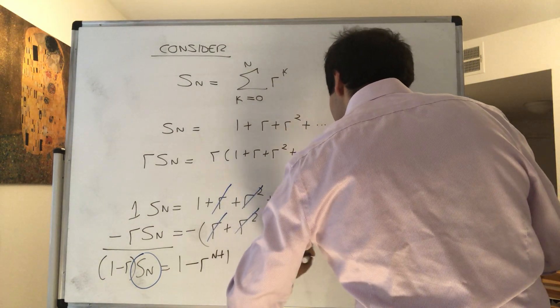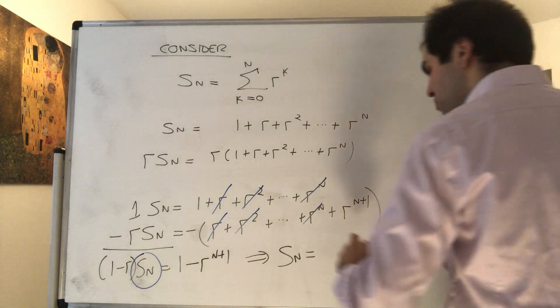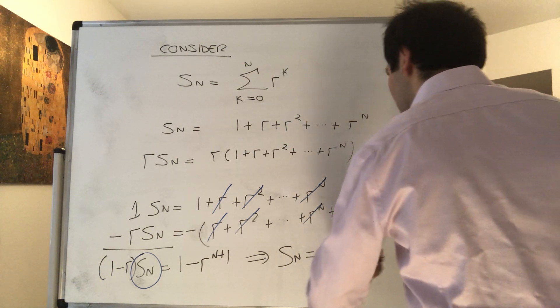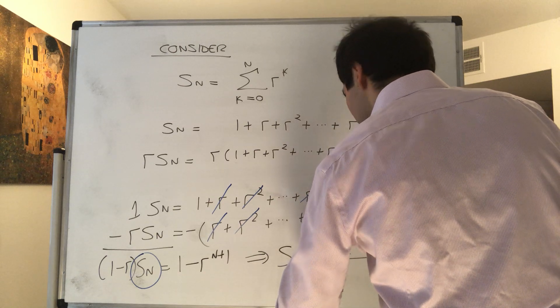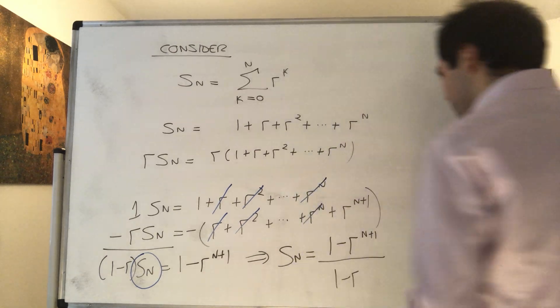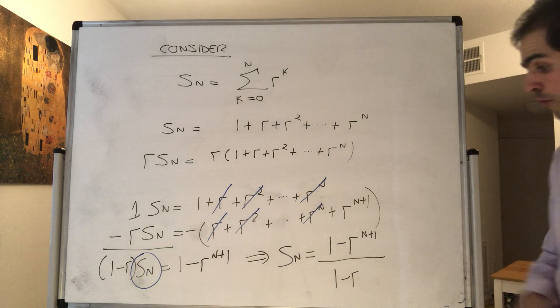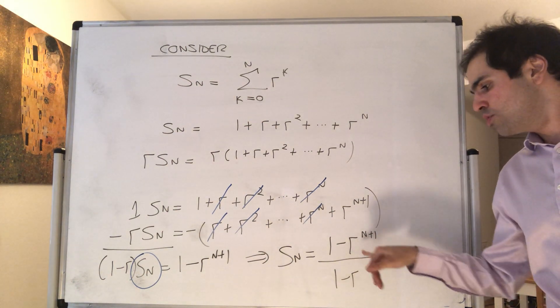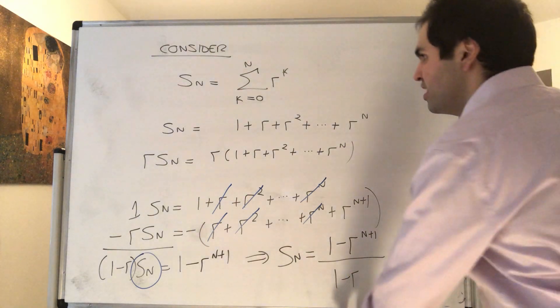Therefore, the beautiful thing is we have an explicit value. We have an explicit formula for S_n, which is (1 minus r to the n plus 1) over (1 minus r). But now remember, r is strictly between minus 1 and 1, so r to the n plus 1 actually goes to 0.